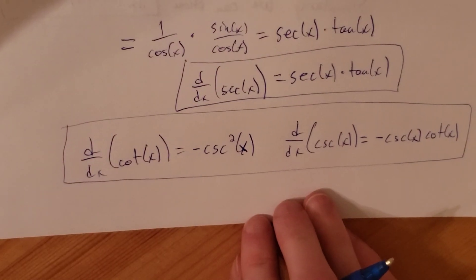We can separate this further. We get the limit as h goes to zero of sine of x, times the limit as h goes to zero of cosine of h minus one all over h, plus the limit as h goes to zero of cosine of x, times the limit as h goes to zero of sine of h over h.